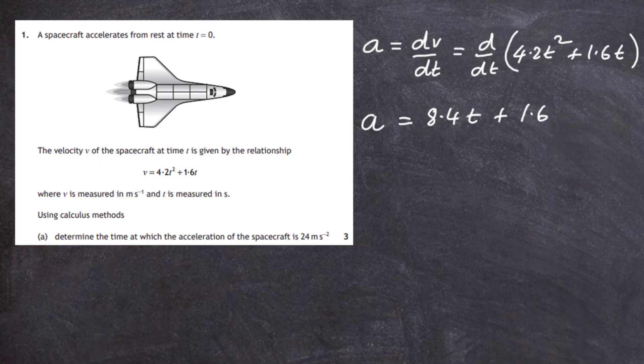That will be the derivative of the velocity which gives us the acceleration. Now we know the value of the acceleration is 24, and that's going to equal 8.4t plus 1.6.